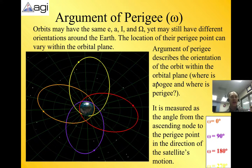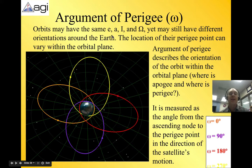We also have argument of perigee. Orbits can have the same eccentricity, angle of inclination, which is I, semi-major axis, and RAAN, and still have different orientations around the Earth.